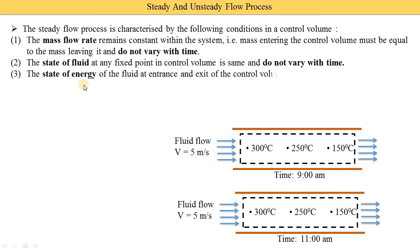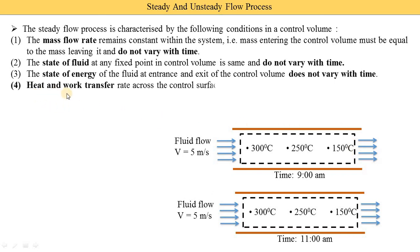The third condition is that the state of energy of the fluid at the entrance and exit of the control volume does not vary with time — fluid entering at the inlet has the same energy with respect to time, and at the exit the fluid also has the same energy with respect to time. The fourth condition is that the heat and work transfer rate across the control surface does not vary with time. For example, if at 9 a.m. the system is rejecting 10 kilojoules per second, then at 11 a.m. it is also rejecting 10 kilojoules per second.